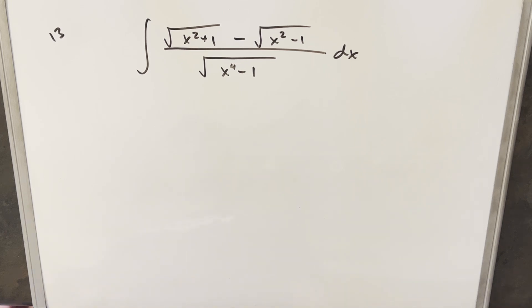Okay, we have here another integral from the University Math Society. This was problem 13. We have the integral of square root of x squared plus one minus square root of x squared minus one over the square root of x to the fourth minus one dx.